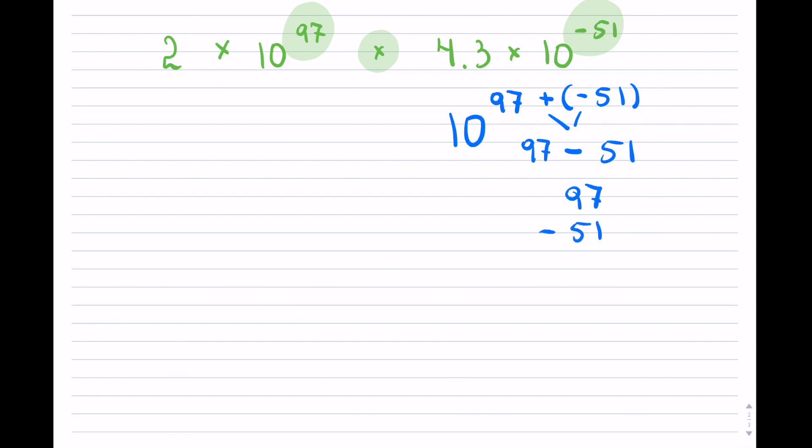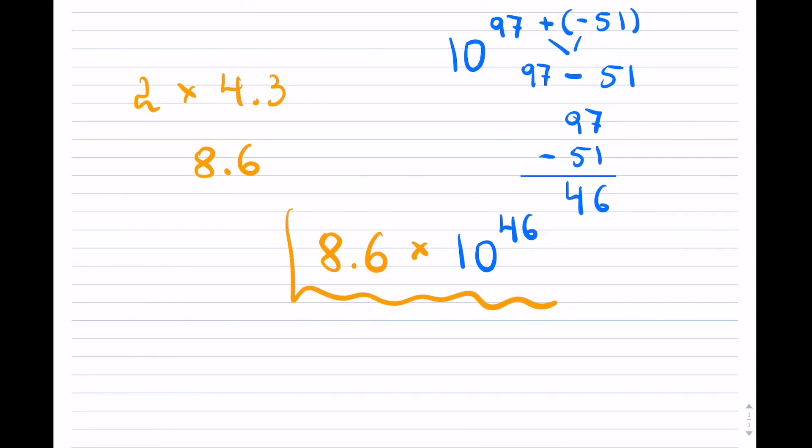So now we can subtract: 97 minus 51. 9 minus 5, and that is your exponent. And like the previous example, I will take my two leading numbers, so 2 times 4.3, and you can try it, you'll see that it equals 8.6. So my answer is that.